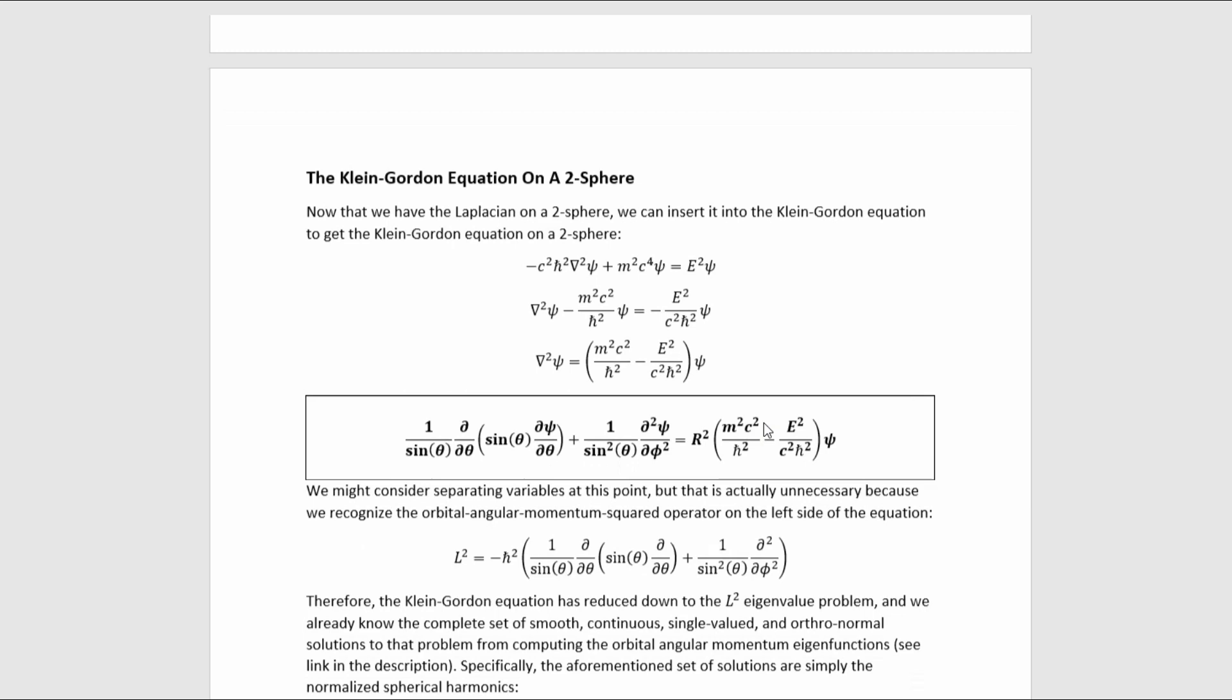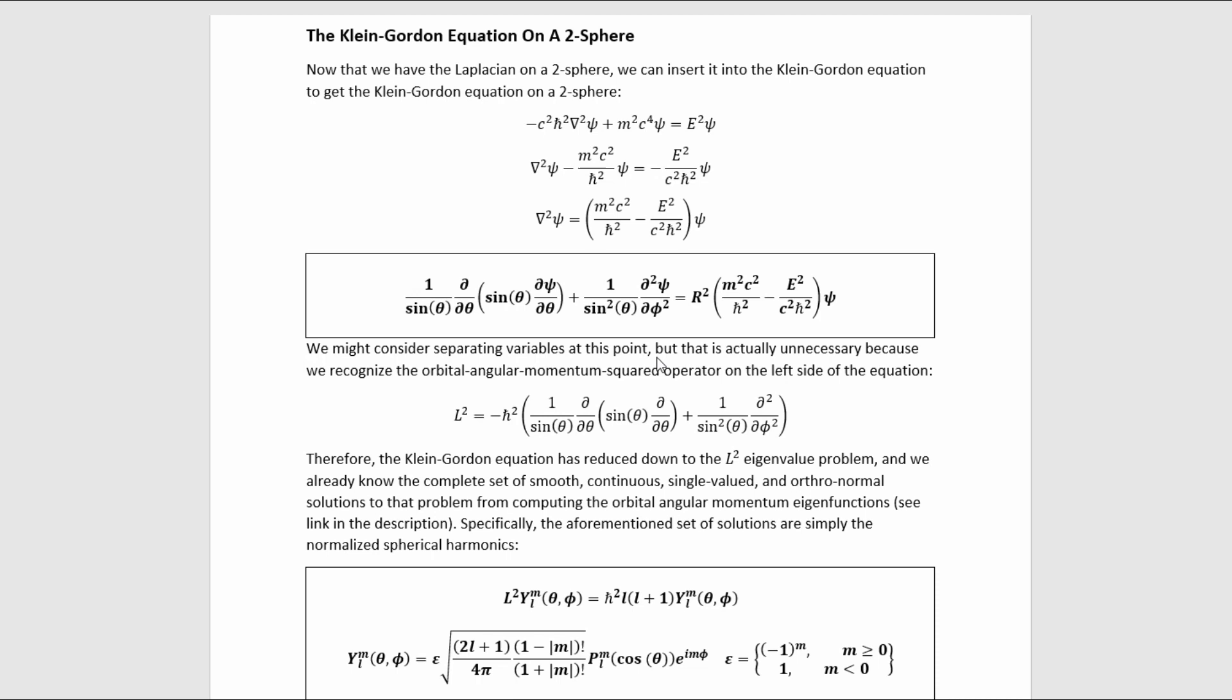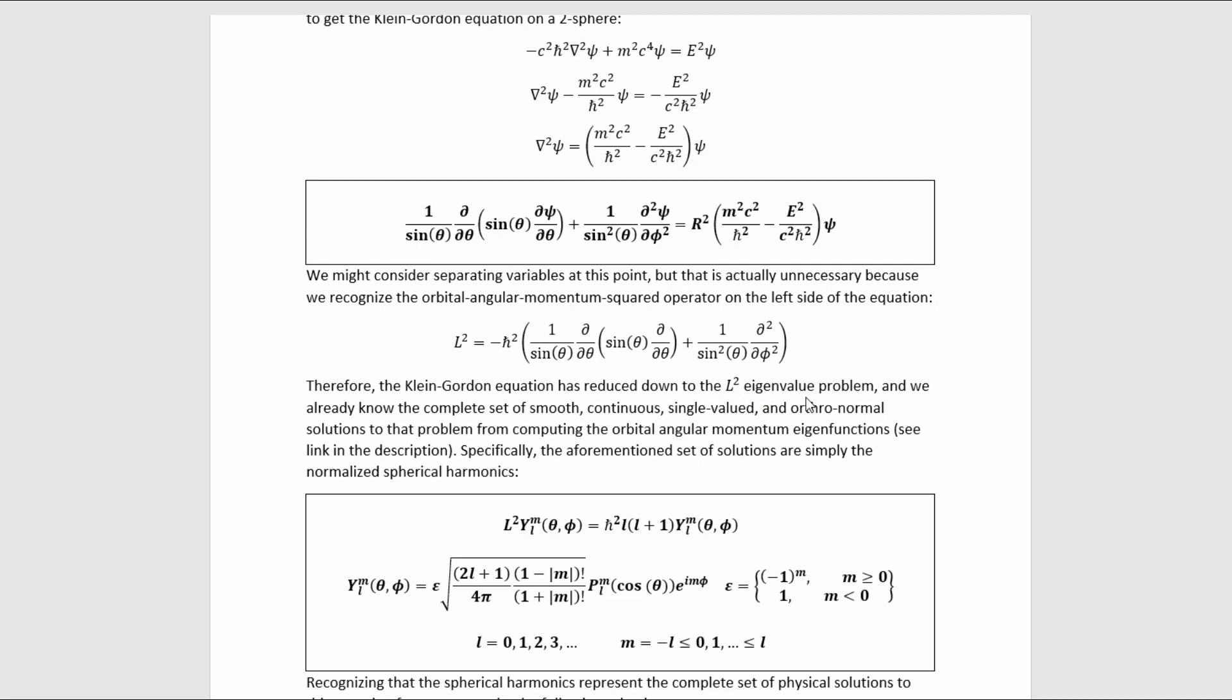We can then insert that into the Klein-Gordon equation to get the Klein-Gordon equation on a 2-sphere. Rearranging the equation a little bit gives us this result. We might consider separating variables at this point, but this is actually unnecessary because we recognize the orbital angular momentum squared operator on the left side of the equation. Well, specifically, this is proportional to it. There is this pre-factor here.